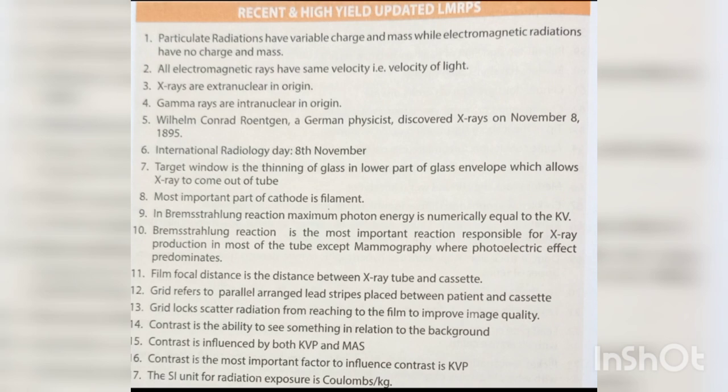Target window is the thinning of glass at the inner lower part of the glass envelope, which allows X-rays to come out of the tube. The most important part of the cathode is the filament. In a bremsstrahlung reaction, maximum photon energy is numerically equal to the kV.